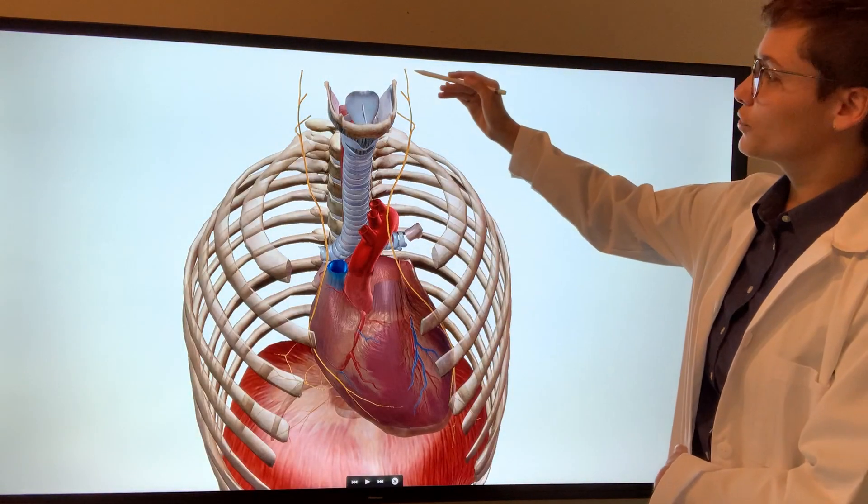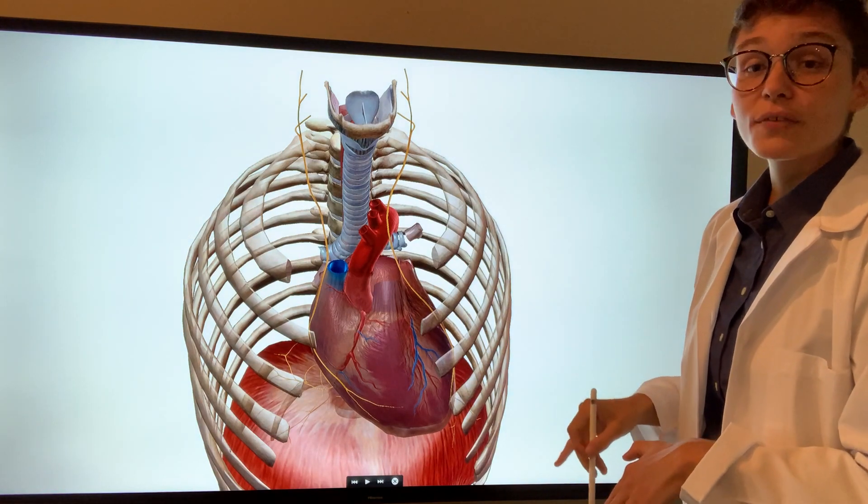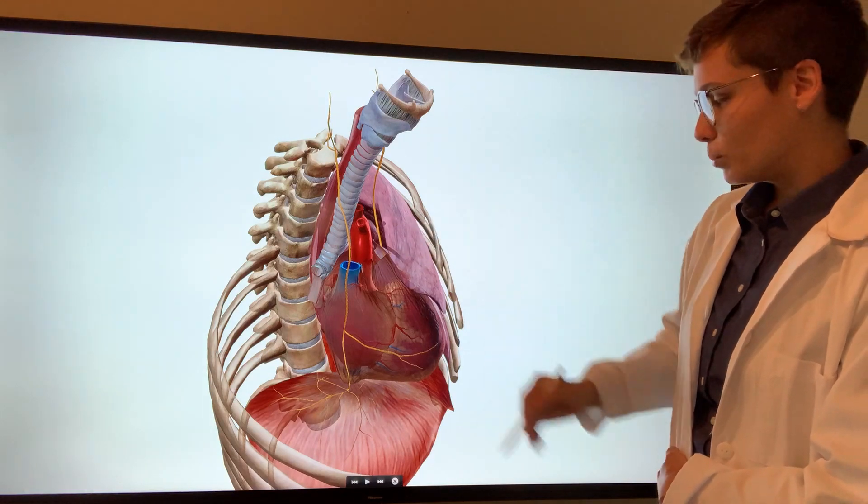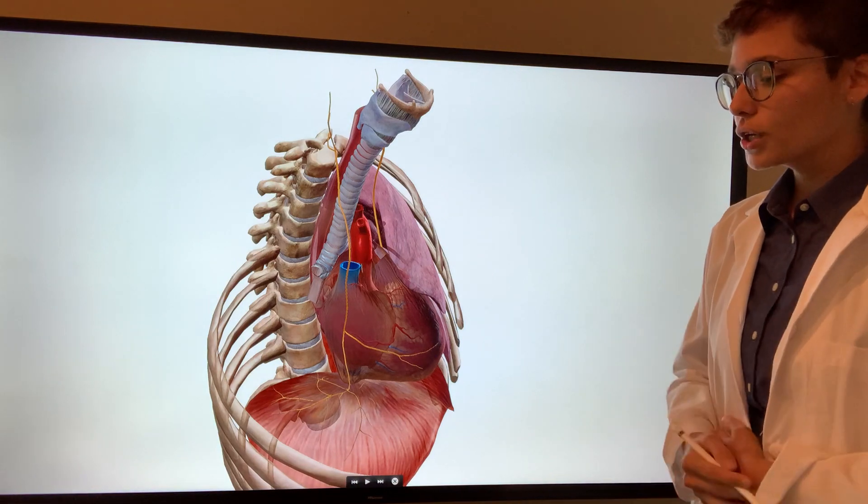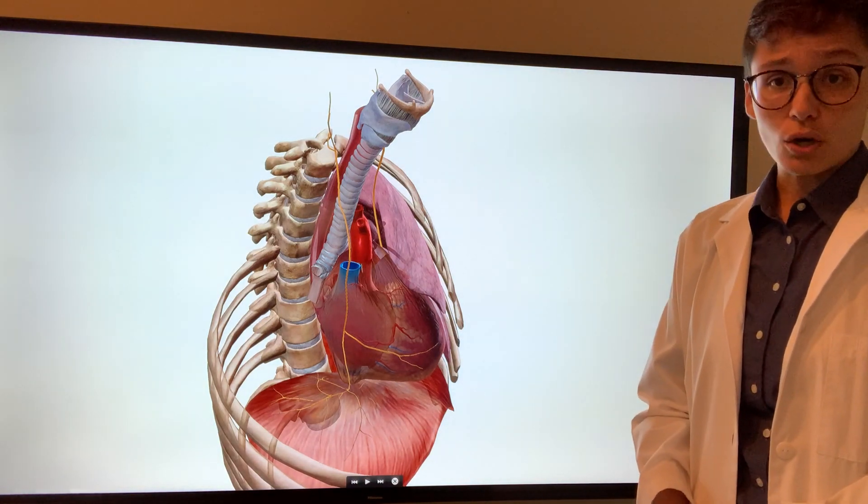Our phrenic nerve originates at C3, C4, C5, and extends down bilaterally to innervate the diaphragm, and it extends along the pericardium and the parietal pleura. Alongside this same pathway, that's where we'll find our pericardiophrenic artery and vein, which is a branch of the internal thoracic artery.